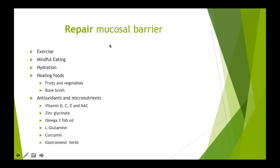The last R is to Repair the mucosal barrier — things that contribute to restoring tight junctions and reducing inflammation along the gut lining. Exercise increases blood flow to that area and helps decrease inflammation. Mindful eating also helps decrease the stress/cortisol response and increases blood flow — this means sitting down when we eat and taking a couple of breaths before eating. I know this is difficult in our busy lives.